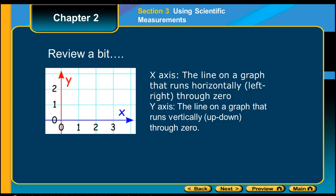To review just a little bit, you have in any graph that looks like this with two axes, you have an x and a y. The x-axis is the line on a graph that runs horizontally, left to right, through zero, and the y-axis is the line on the graph that runs vertically up and down through zero.